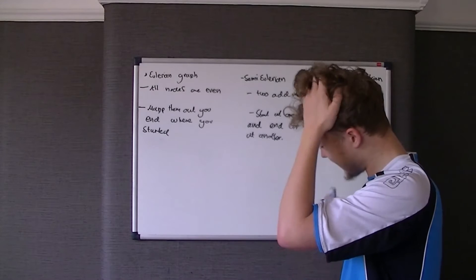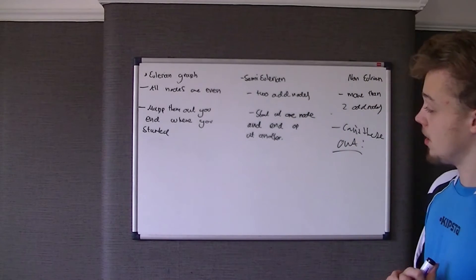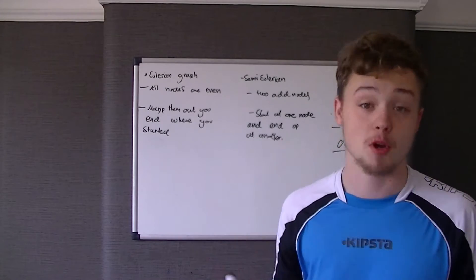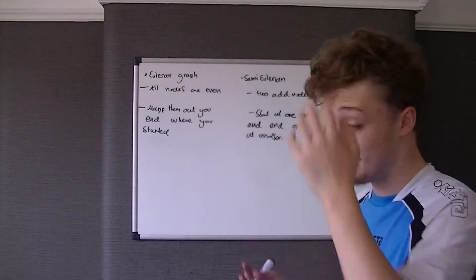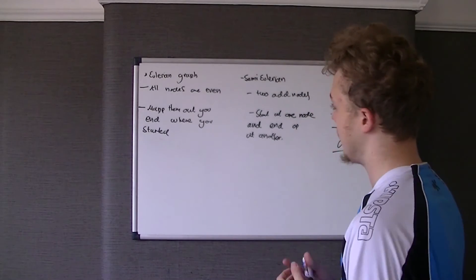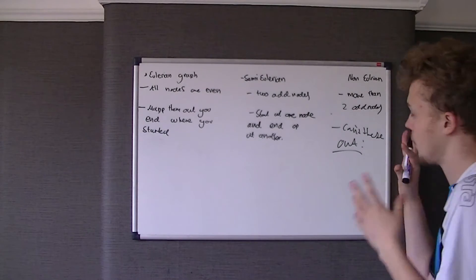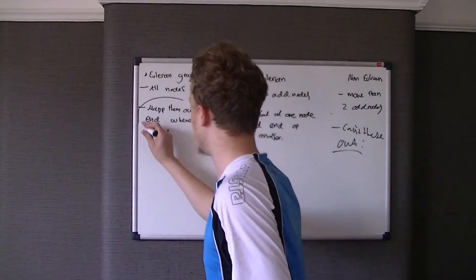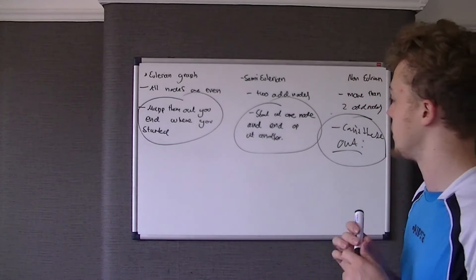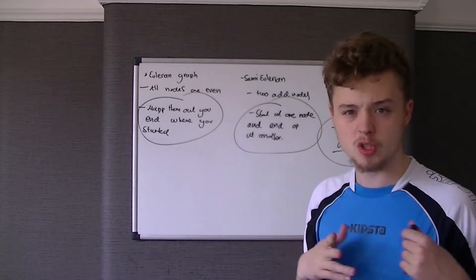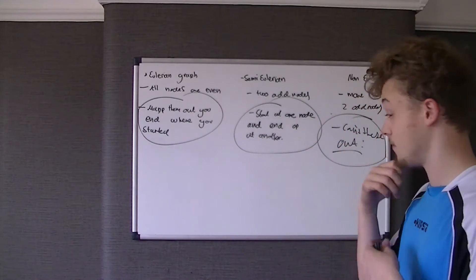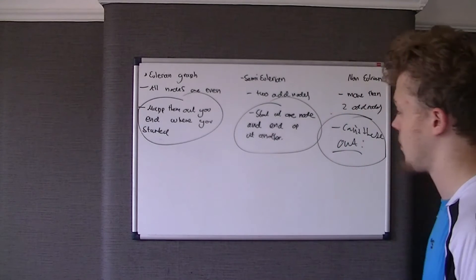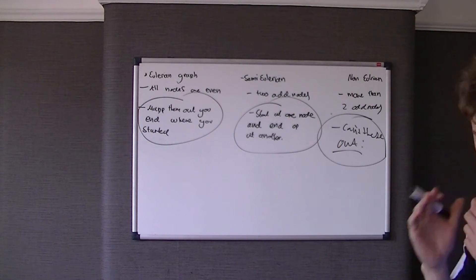So what we're going to be looking at next is how to turn a non-Eulerian graph Eulerian. And we do that through the Chinese Postman algorithm. What I'm going to do — I think it's best emphasised through a question — so I'll give you a second if you did want to copy this down, but they are quite easy to understand. I'm going to rub all that out in a second and show you a question using the Chinese Postman algorithm, and then we'll go through it.